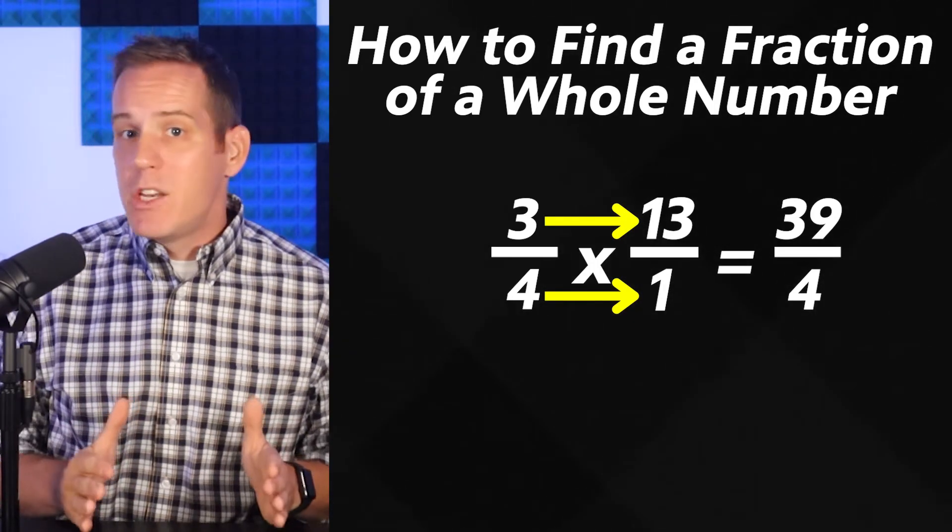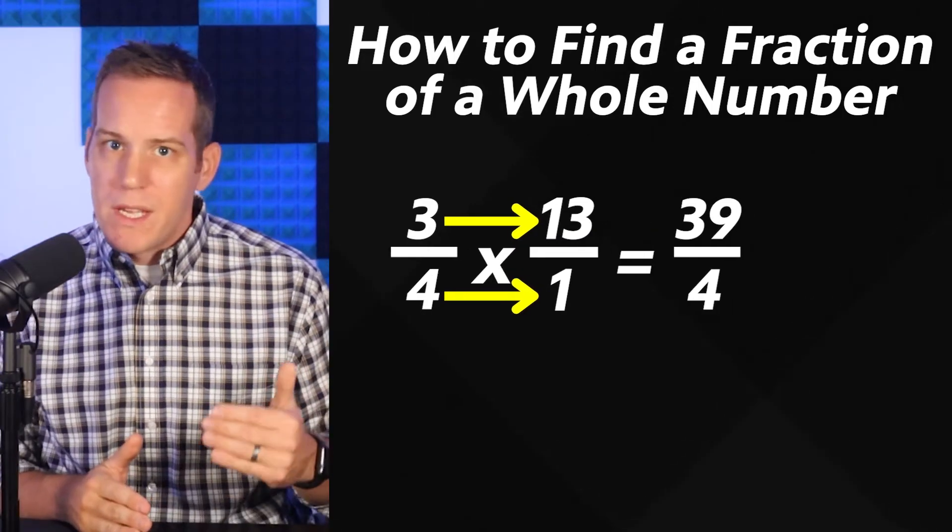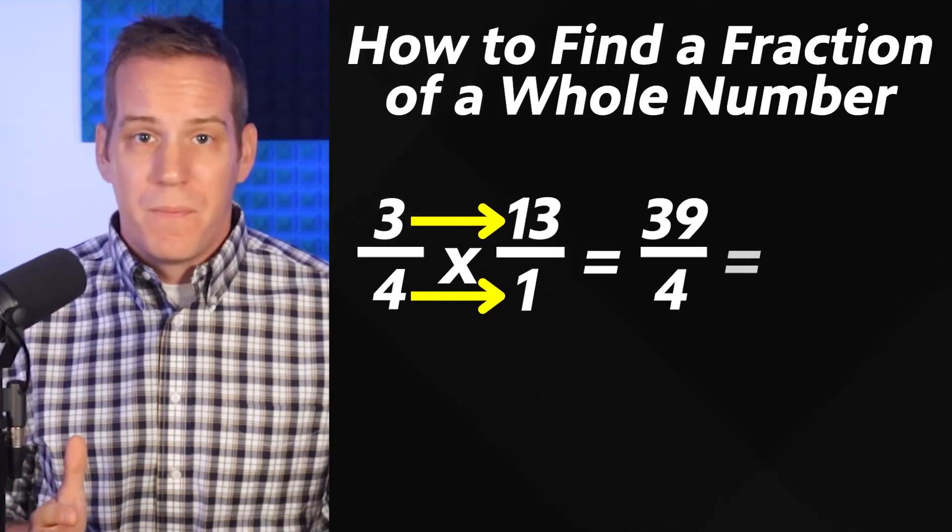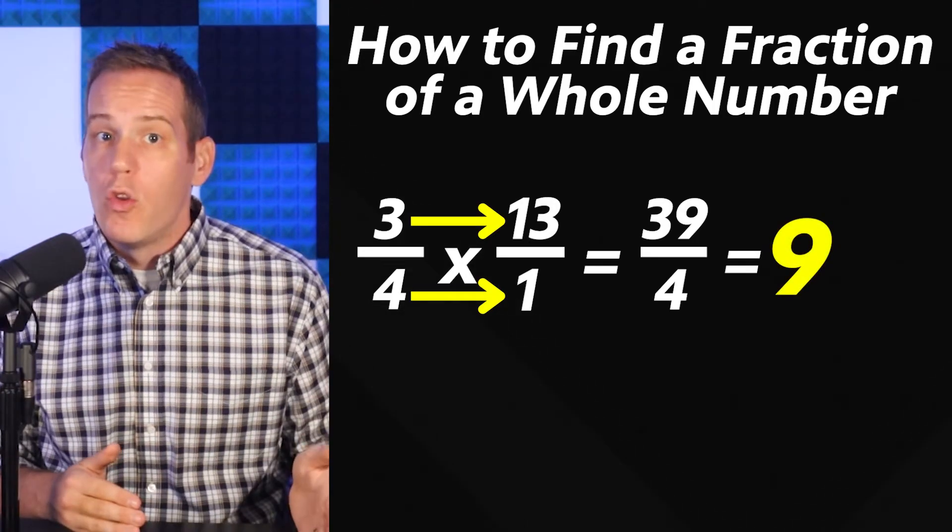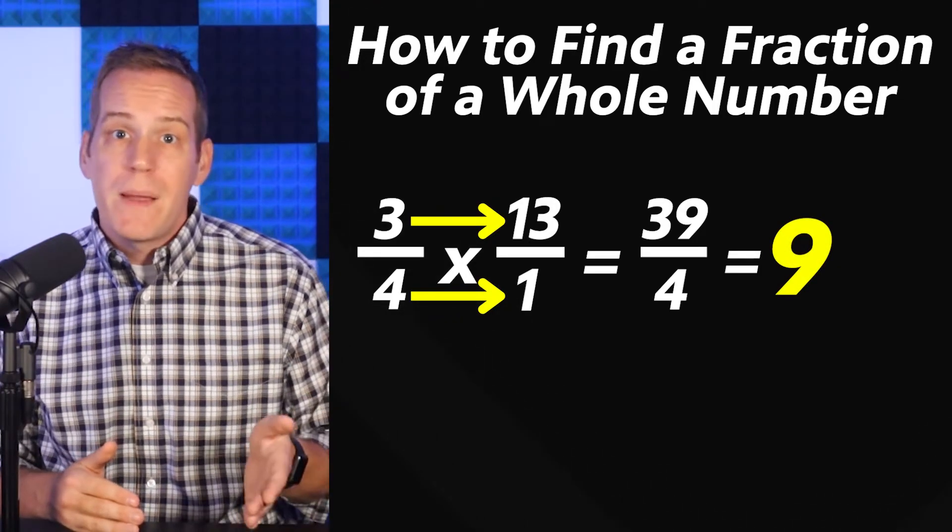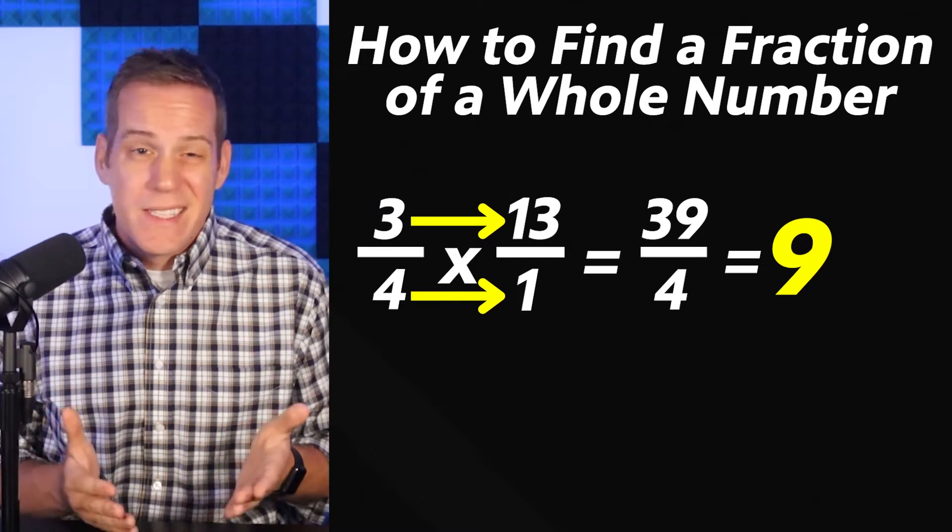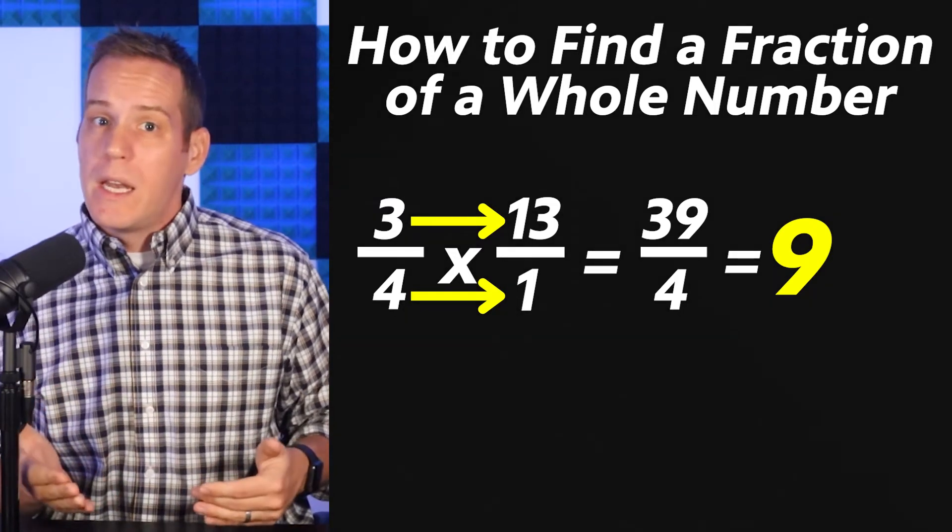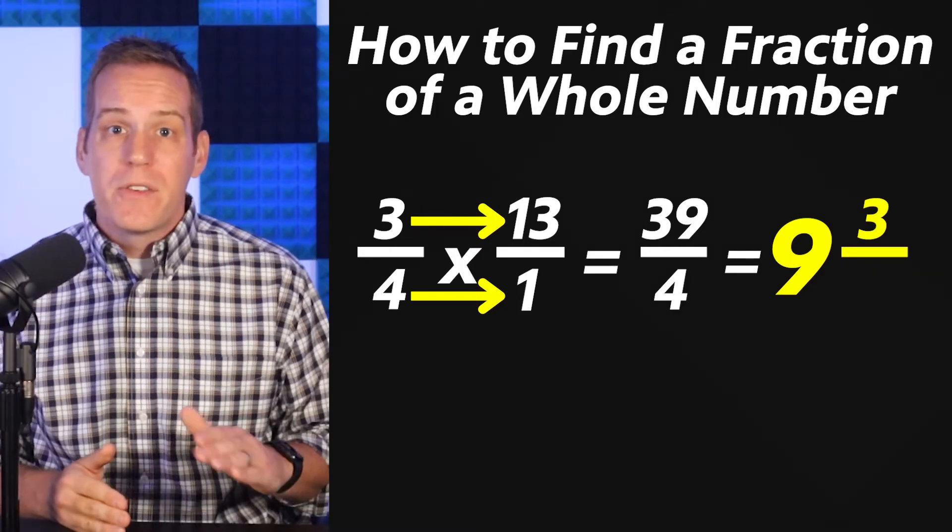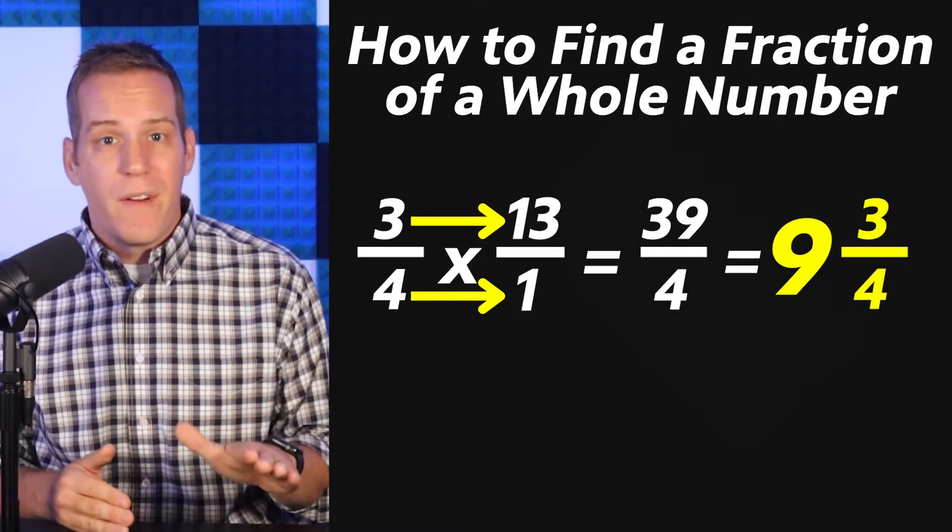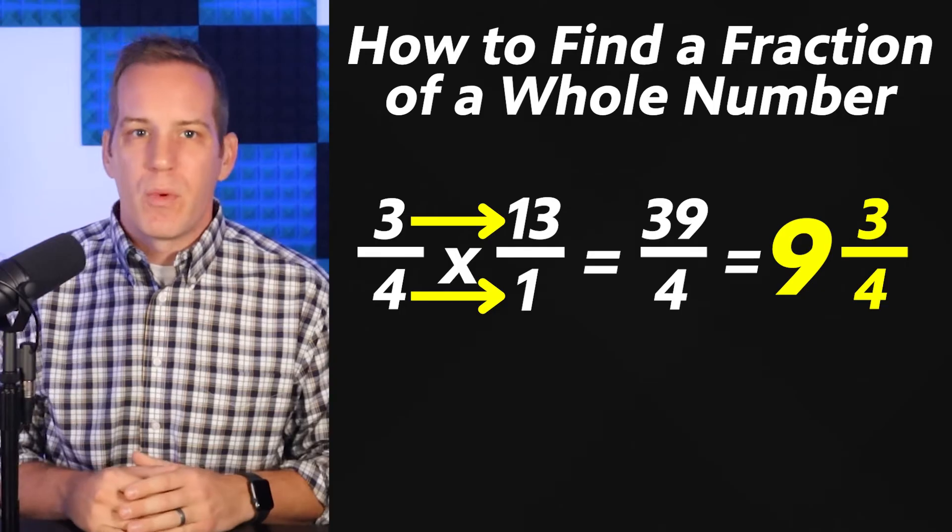Now I need to turn this back into a mixed number since 39 over 4 is improper and that's just division. 4 goes into 39 nine times so that's our whole number. Now 4 times 9 is 36 and it'd take 3 more to count up to 39 so 3 becomes our numerator. The denominator stays the same so we have our final answer which is 9 and 3 fourths.